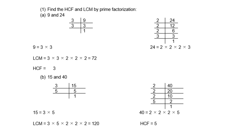For 15 and 40: factors of 15 are 3 × 5; factors of 40 are 2³ × 5. LCM: take one of each and the biggest — 3 × 5 × 2³ = 120. The only number appearing in both is 5, so the HCF is 5.